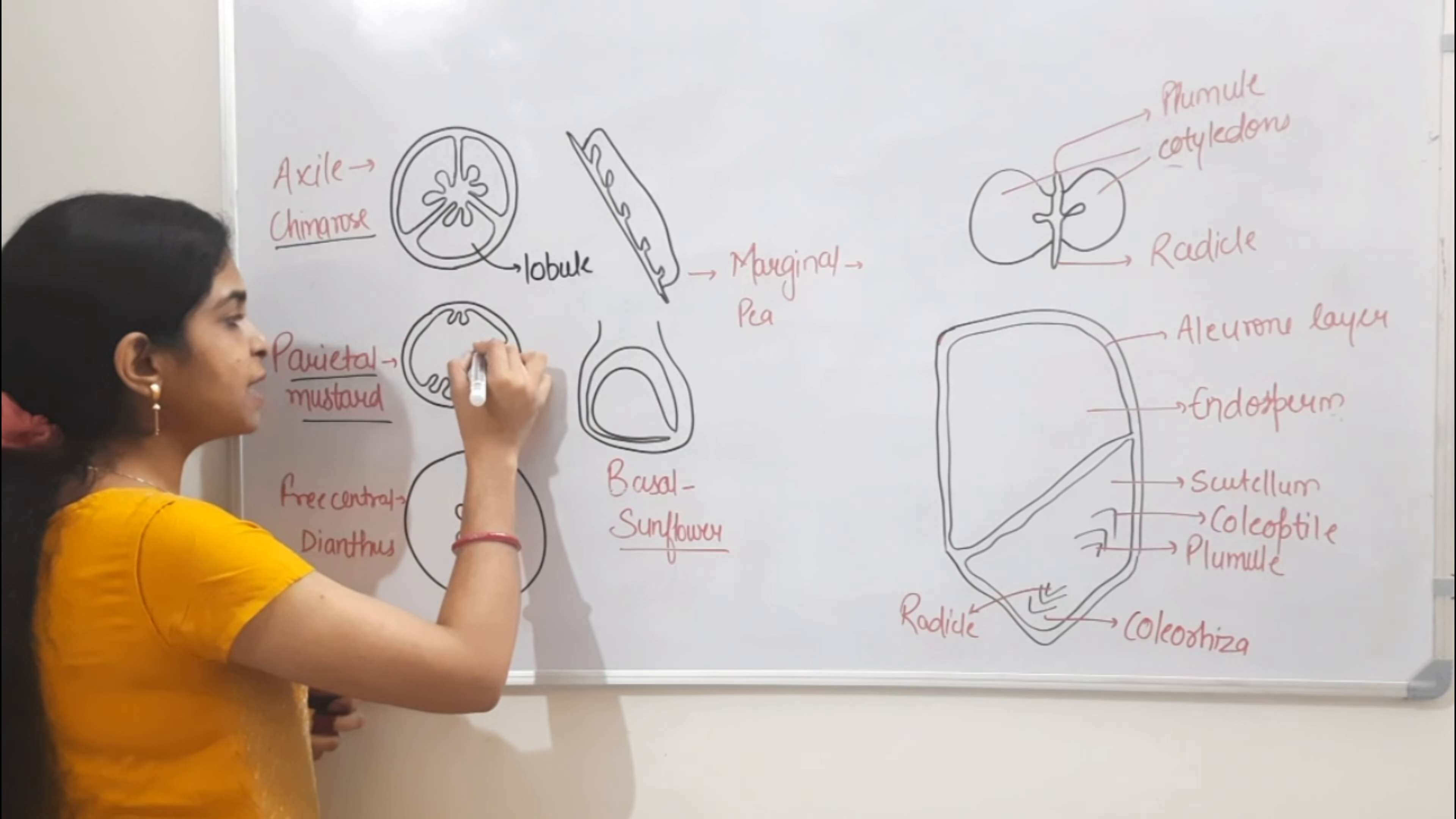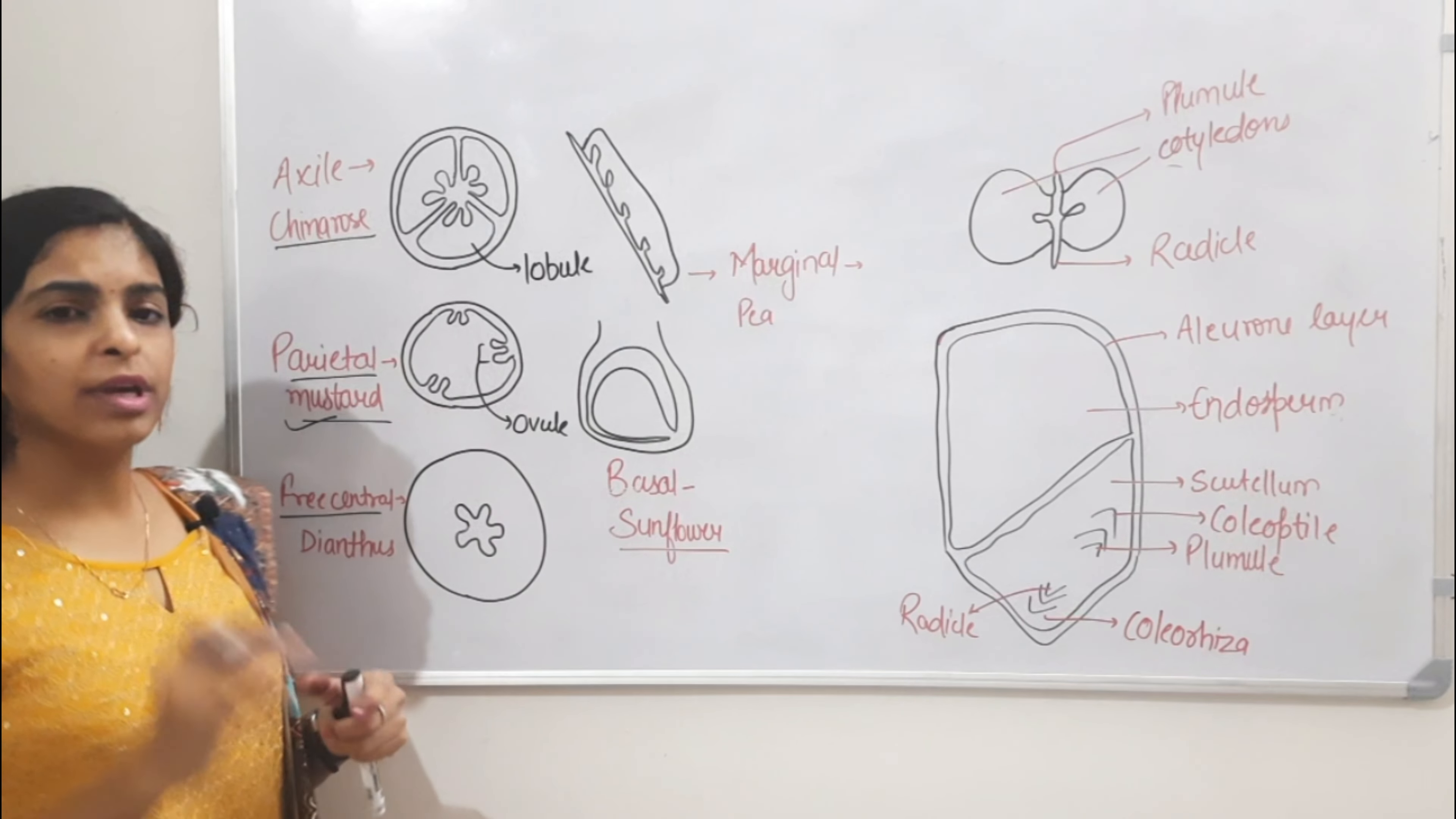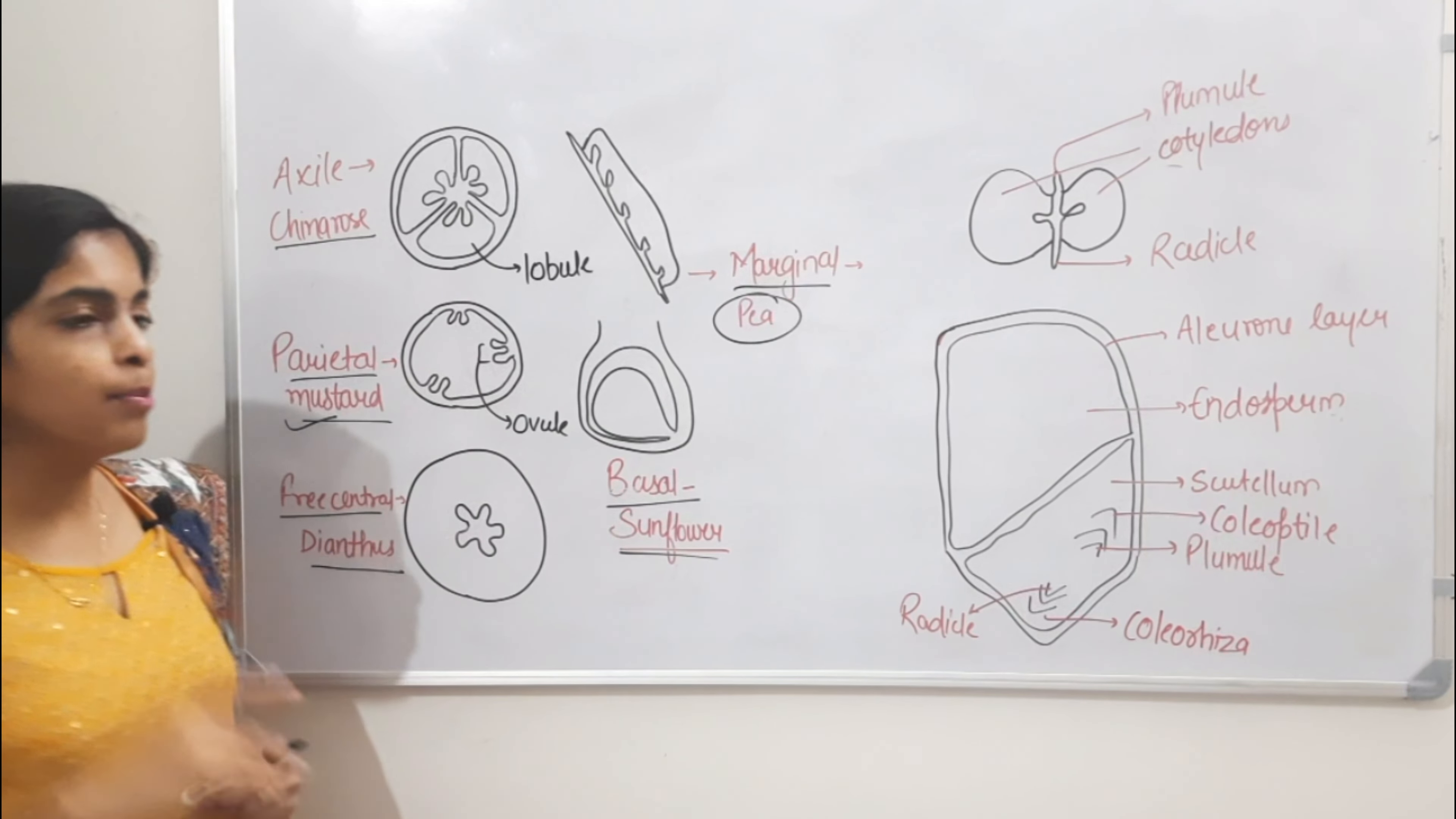Next is parietal. In parietal, ovules are present in the ovary, but ovules are attached in the inner layer. We call it parietal placentation, found in mustard. Now free central - in free central there are no septa. Next is marginal found in pea. Then basal, where ovules are basal.